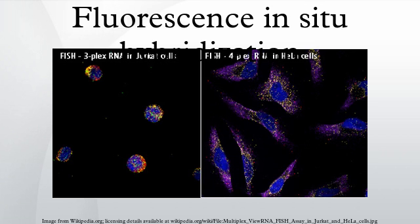Fluorescence microscopy can be used to find out where the fluorescent probe is bound to the chromosomes. FISH is often used for finding specific features in DNA for use in genetic counseling, medicine, and species identification. FISH can also be used to detect and localize specific RNA targets in cells, circulating tumor cells, and tissue samples. In this context, it can help define the spatial-temporal patterns of gene expression within cells and tissues.